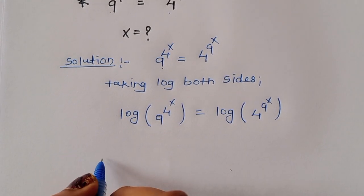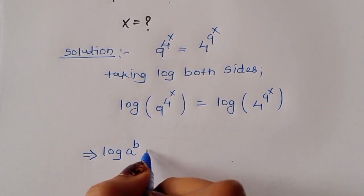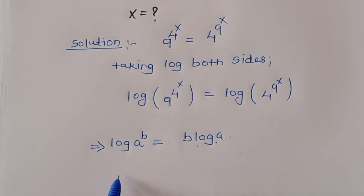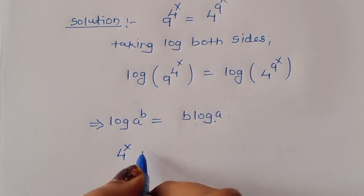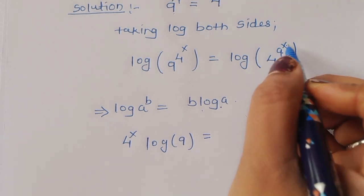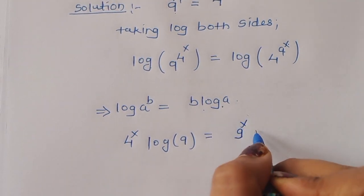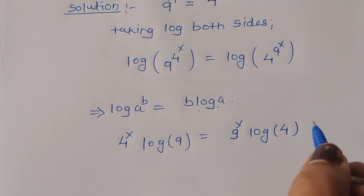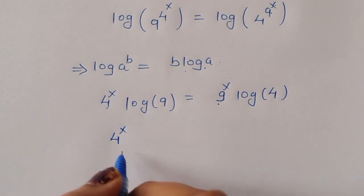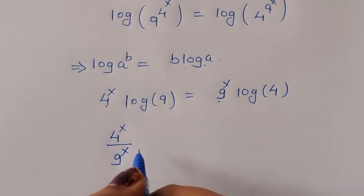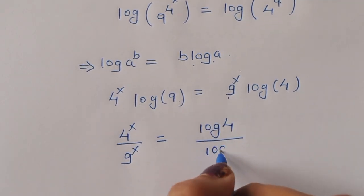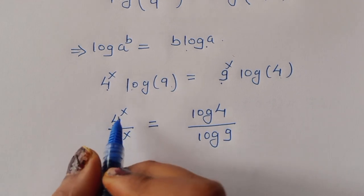Now we know the formula: log of a power b is equal to b log of a. Using this formula, we can write 4 power x times log of 9 is equal to 9 power x times log of 4. Rearranging: 4 power x over 9 power x is equal to log of 4 divided by log of 9.